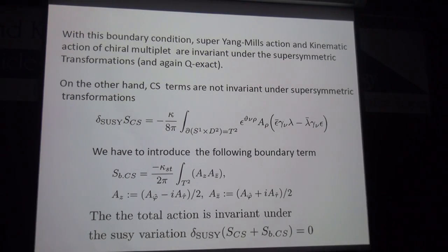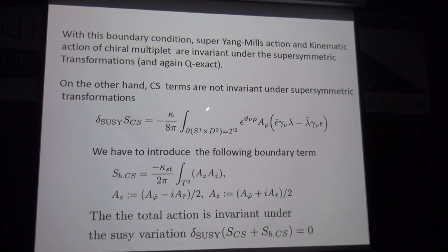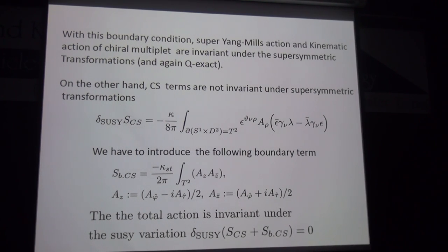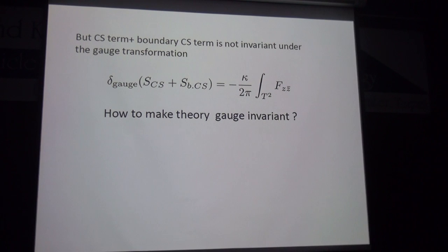With these boundary conditions, the Yang-Mills action and the kinetic action of the chiral multiplet are invariant under supersymmetric transformation and remain Q-exact. However, the Chern-Simons term is problematic because under the supersymmetric transformation this term is not invariant and produces a surface term. We can introduce a boundary interaction which compensates the supersymmetric variation of the bulk Chern-Simons term, preserving supersymmetry, but the combined Chern-Simons term and boundary term are not gauge-invariant, so the theory is not well-defined.